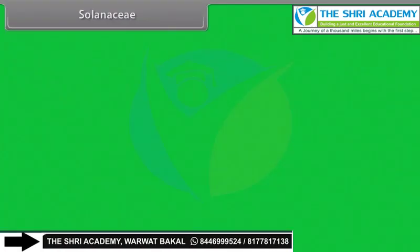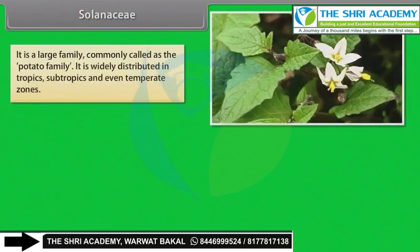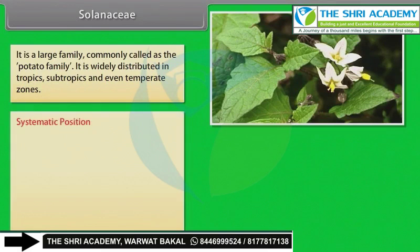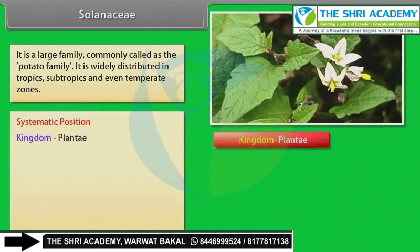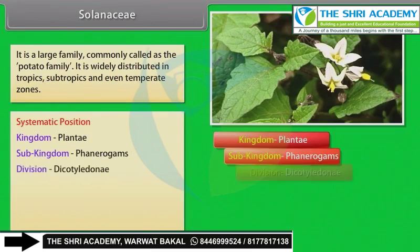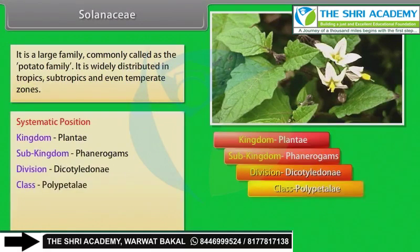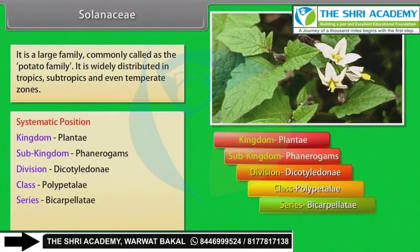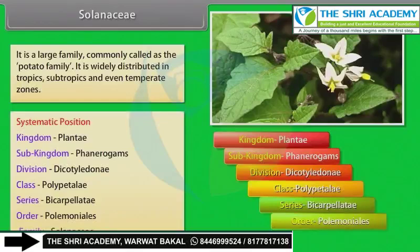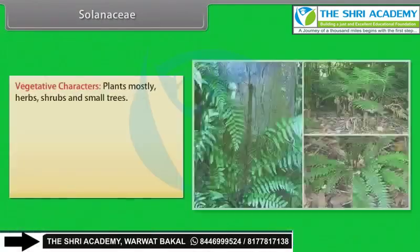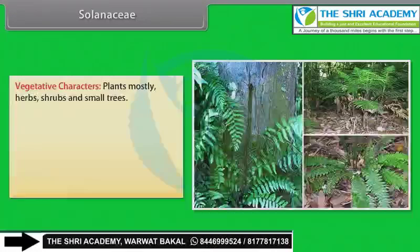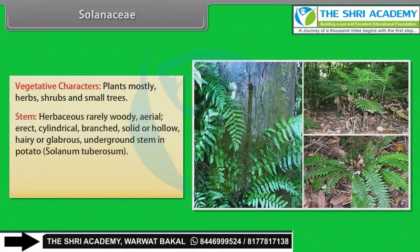Solanaceae: It is a large family, commonly called the potato family. It is widely distributed in tropics, sub-tropics, and even temperate zones. Systematic position: Kingdom Plantae, Sub-kingdom Phanerogams, Division Dicotyledoni, Class Polypetali, Series Bicarpellatae, Order Polymoniales, Family Solanaceae. Vegetative characters: plants mostly herbs, shrubs and small trees; stem herbaceous, rarely woody, aerial, erect, cylindrical, branched, solid or hollow, hairy or glabrous; underground stem in potato (Solanum tuberosum).